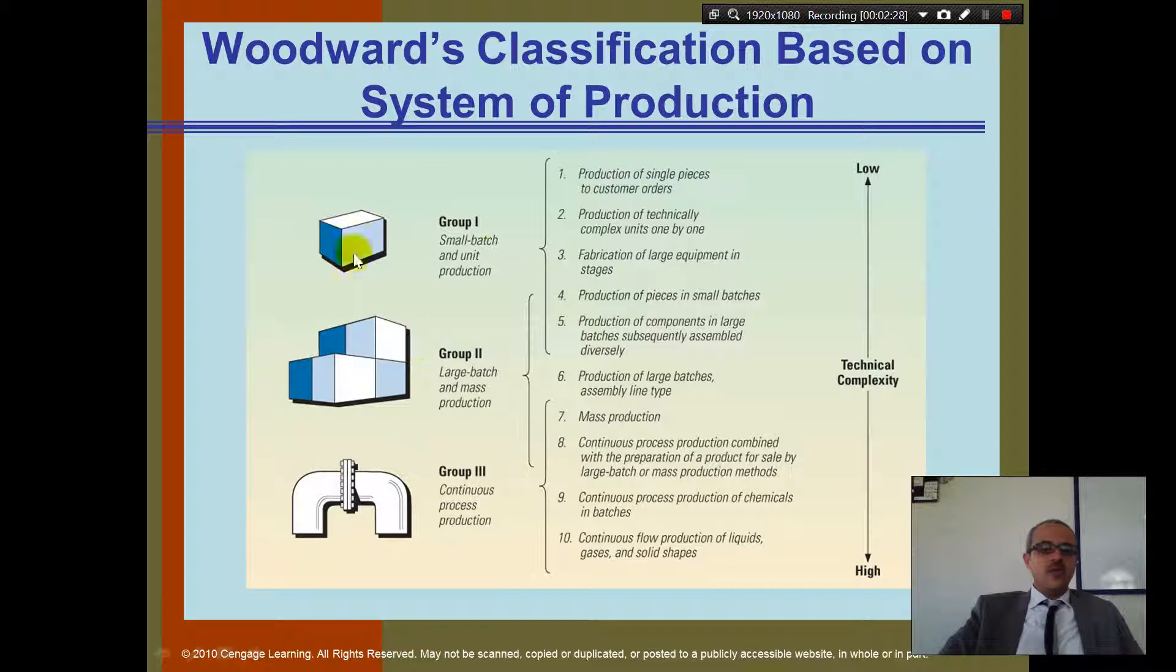Now, if I'm going to make a, this is a small batch, this is a large batch, and this is continuous process production. Do you guys know what we mean by a small batch? It means you produce a few number of units. Group 2, which is a large batch, you produce a lot. Number 3, you produce continuous, so you don't stop.